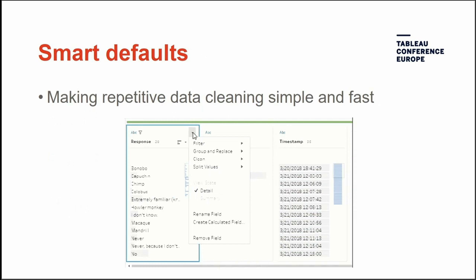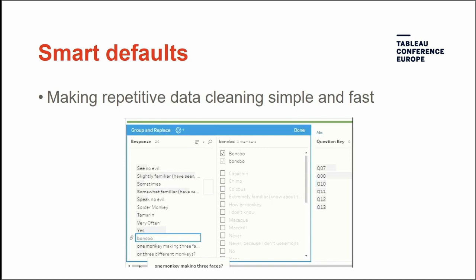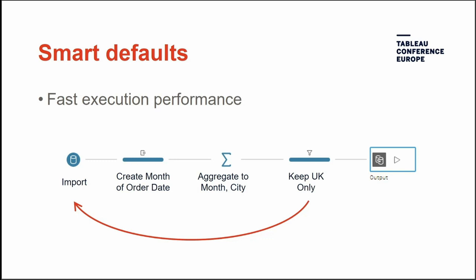Tableau Prep also uses smart algorithms to fix common data prep challenges — for example, fuzzy clustering that lets you group different items by pronunciation with just one click. By intelligently pushing operations down to the database level when possible, you can stay in the flow rather than worrying about efficiency. For example, if you realize towards the end of creating a flow that you only need UK data, Prep will push that filter to the database level so prior steps only pull in UK data.